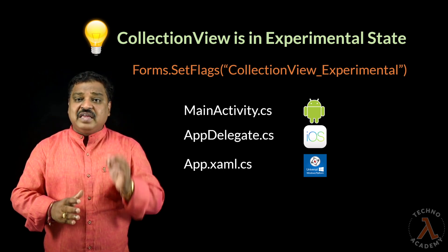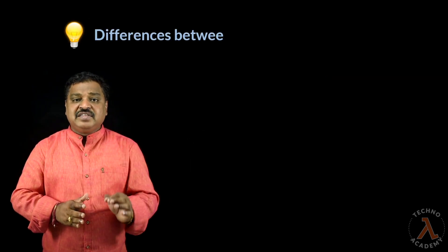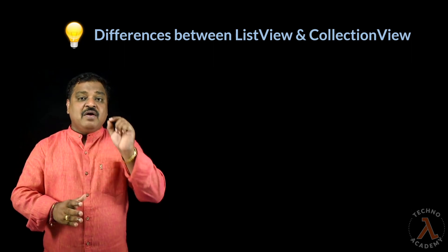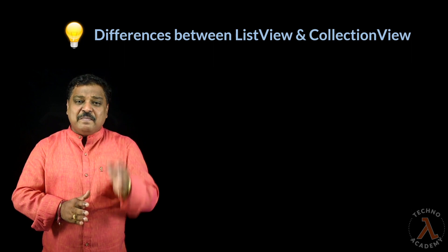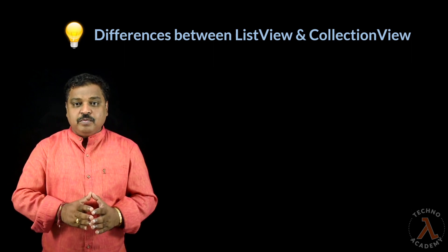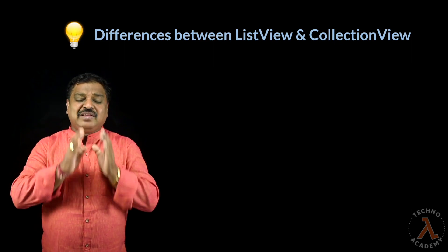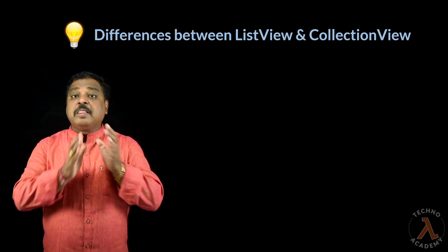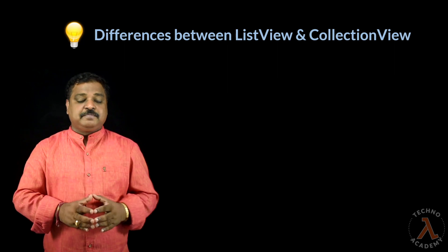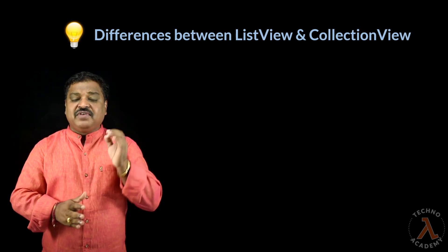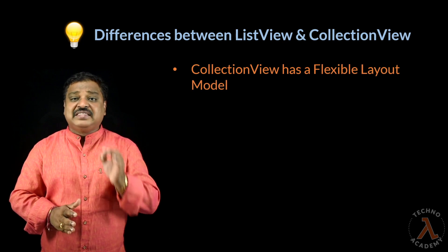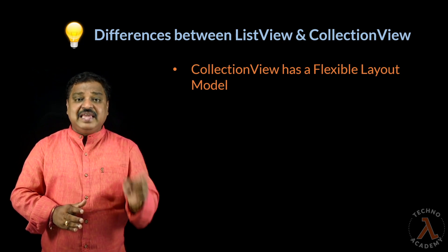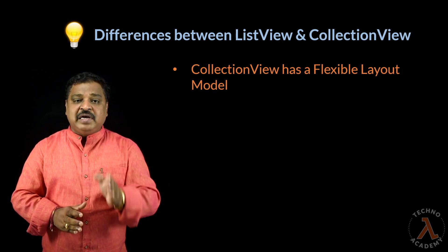Before we start working with Collection View, let us first understand the differences between Collection View and ListView. Even though most of the time we find many similarities with ListView, we have quite a lot of differences also. The first difference is that Collection View has a very flexible layout model which allows data to be displayed vertically or horizontally in a list or multi-column grid structure.